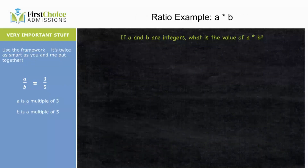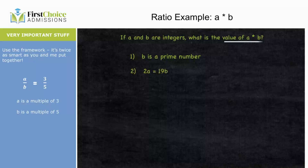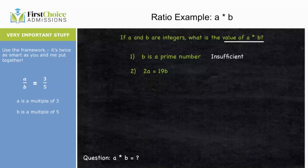Next question: if a and b are integers, what is the value of a times b? Statement 1 says b is a prime number. That's barely helpful — b could be an infinite number of values, and we have no information about a. Clearly insufficient.